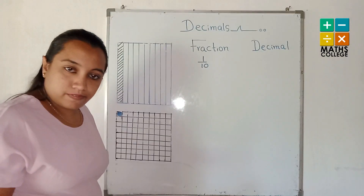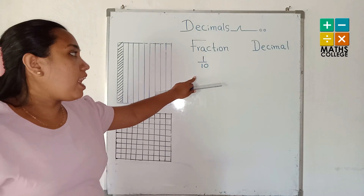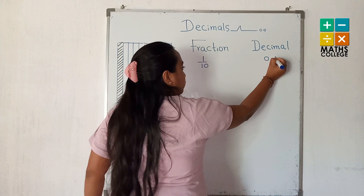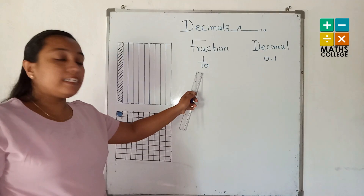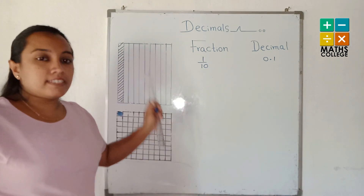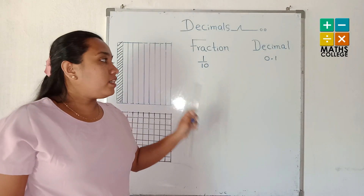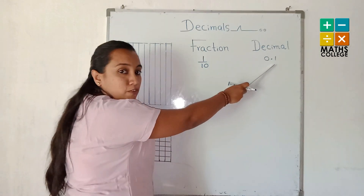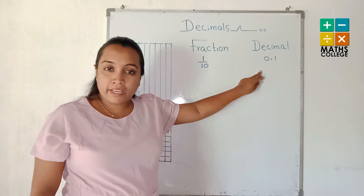One tenth is the fraction. How do we write this fraction as a decimal? It can be written as zero point one. The denominator is ten, and ten has one zero. Therefore, the decimal number also has only one decimal place — this is the first decimal place. The reading method of this is zero point one.